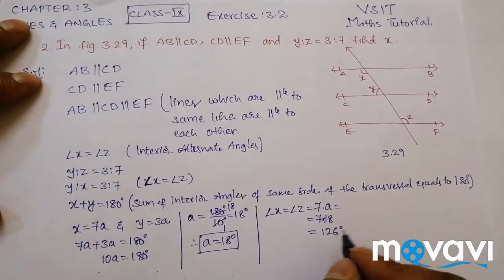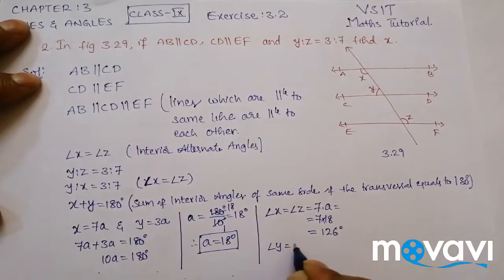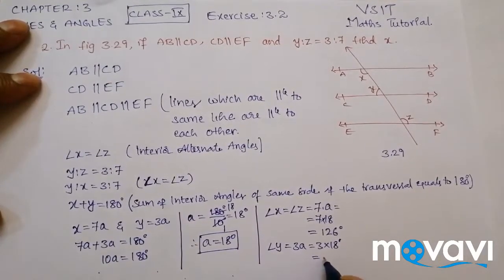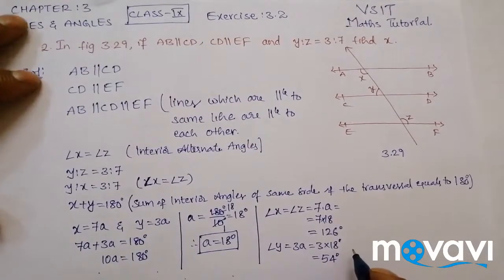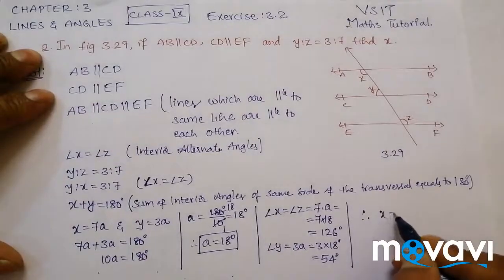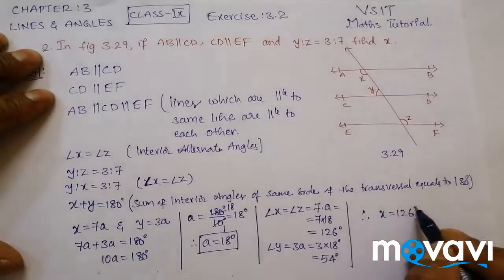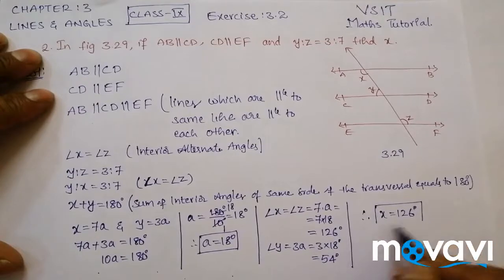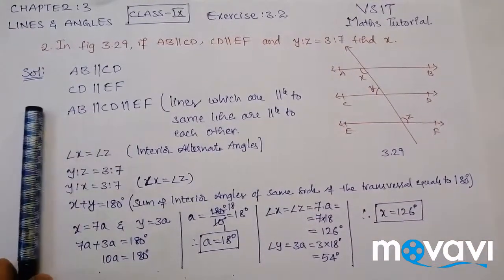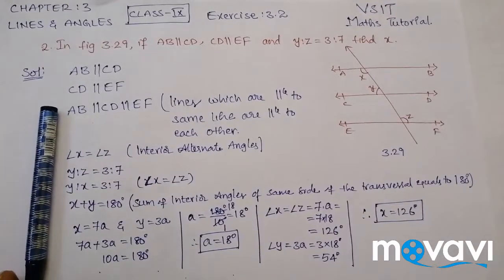So X is 126 degrees. Angle Y is equal to 3 times A, that is 3 into 18 degrees, which is equal to 54 degrees. Therefore X is equal to 126 degrees. This is the procedure to find the value of X for this problem.